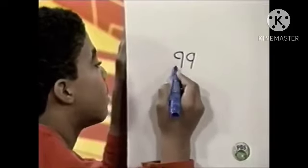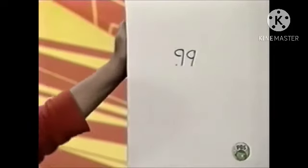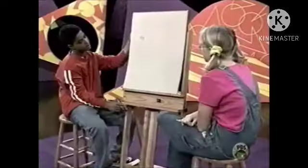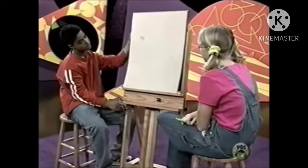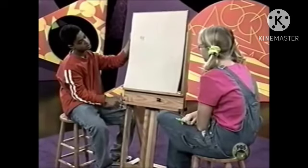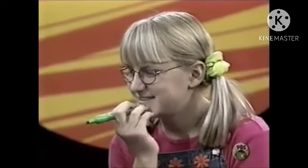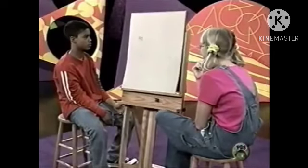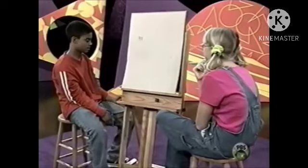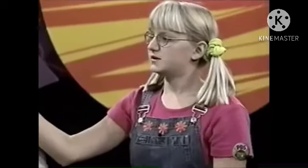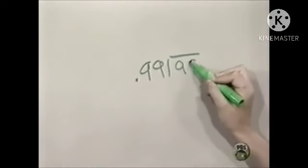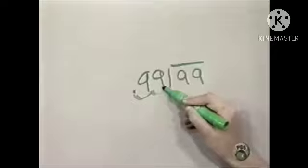Let's try ninety-nine divided by point ninety-nine. Okay, all right. Now we have to move the decimal over twice first.